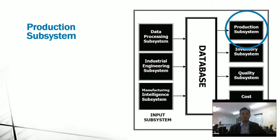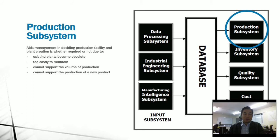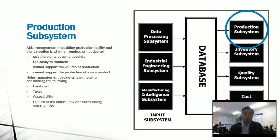Let's go to the output subsystems, starting with the production subsystem. It aids management in deciding if they need a new production facility or plant. Sometimes, if existing plants become obsolete or too costly to maintain and cannot support the volume of production or the production of a new product, these factors are considered in deciding whether to build a new plant or production facility. It also helps management in deciding plant location.